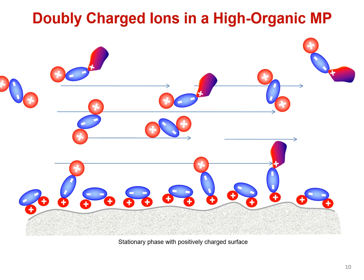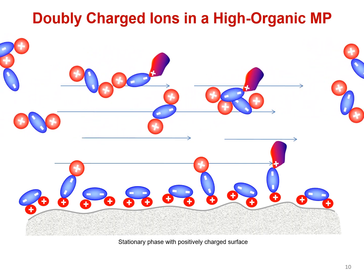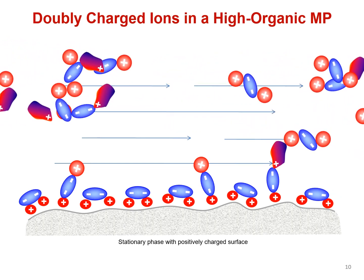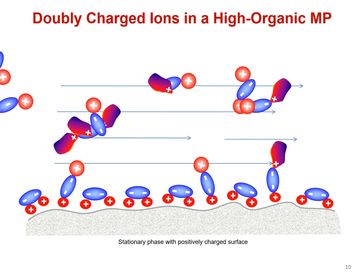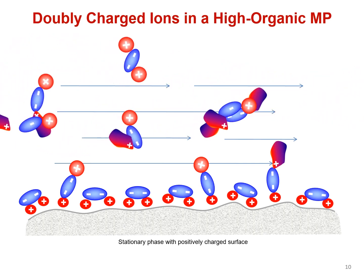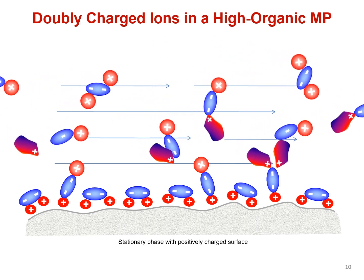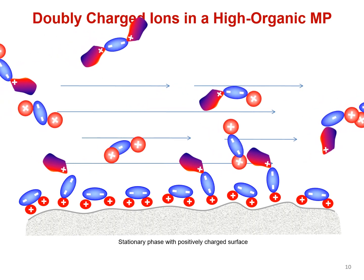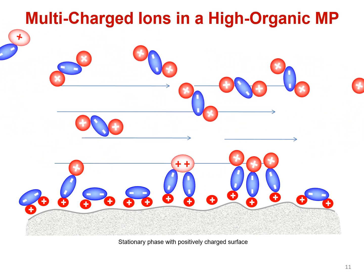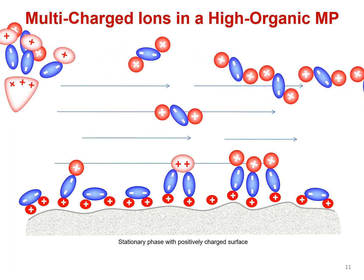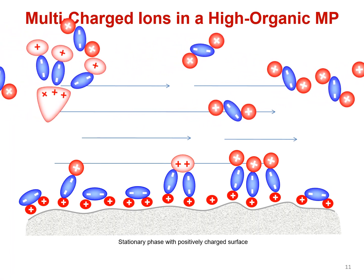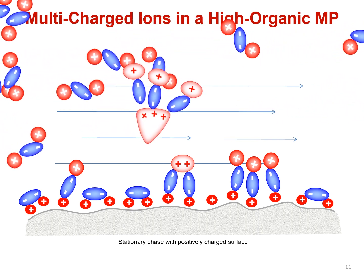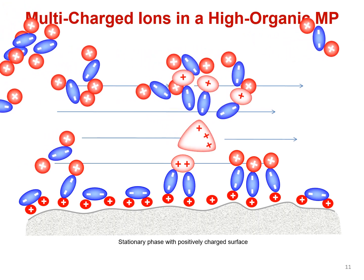However, when the ionic modifier has a double charge, the attraction forces between the oppositely charged analyte, modifier ion, and the surface start to bring counter ions together. This eventually leads to the formation of bridges between the similarly charged surface and analyte ions via the oppositely charged buffer ions. The degree of retention strongly depends on the number of charges each analyte has. Analytes with more charges will be able to create more bridges, resulting in longer retention. However, in an aqueous mobile phase, the bridges will break due to the solvation of the ions, and the retention will decrease drastically.